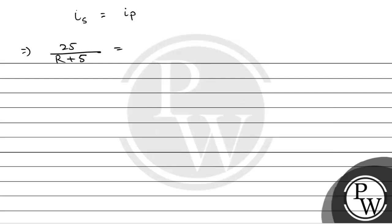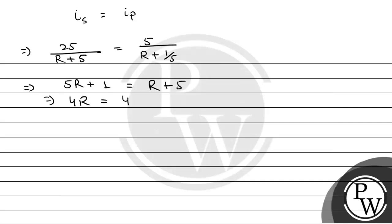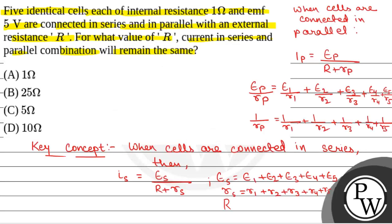Now we equate: for what value of R is I in series equal to I in parallel? That gives ES/(R + RS) = EP/(R + RP), i.e., 25/(R + 5) = 5/(R + 1/5). From here, 5(R + 5) = 25... simplifying gives 4R = 4, so R equals 1 ohm. The required value of external resistance R is 1 ohm, so the correct option is option A.